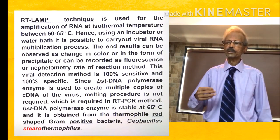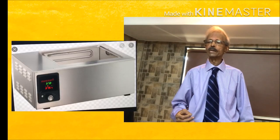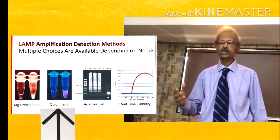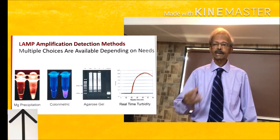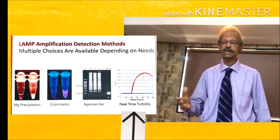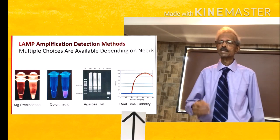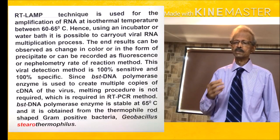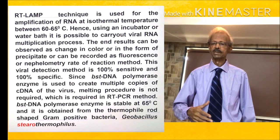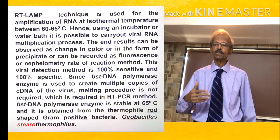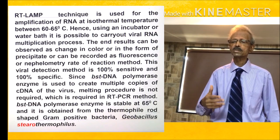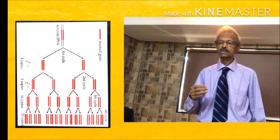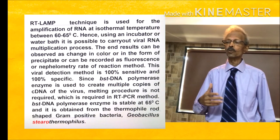Hence, using an incubator or even a water bath, it is possible to carry out the viral RNA multiplication process. The end result can be observed as a change in colour, in the form of a precipitate, or recorded as fluorescence or by colorimetry rate-of-reaction method. This viral detection method is 100% sensitive and 100% specific. BST-DNA polymerase enzyme is used in this process to create multiple copies of cDNA of the virus, so a melting procedure is not required, which is required in RT-PCR. BST-DNA polymerase enzyme is stable at 65 degrees and is obtained from thermophilic bacteria.